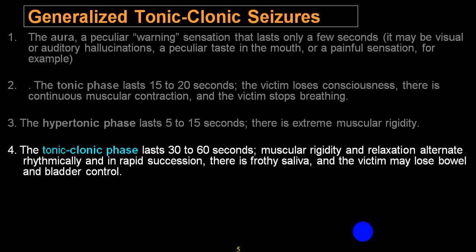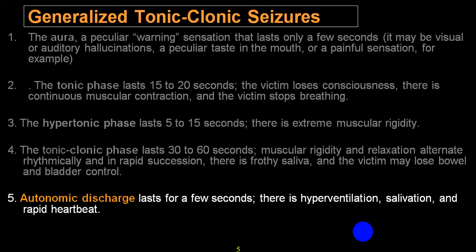During the clonic phase: frothy saliva, involuntary bladder and bowel movement, jerky movement of the upper and lower limbs, eyeball rolling up, jerky movement of the tongue. Because of jerky contraction of the jaw, there can be tongue injury, cheek injury, and lip injury. The person can even aspirate. There may be hyperventilation, excessive salivation, and even tachycardia.